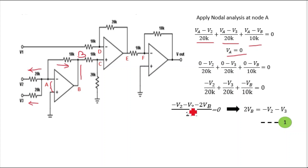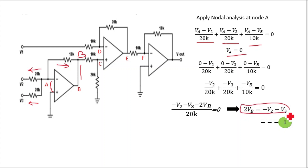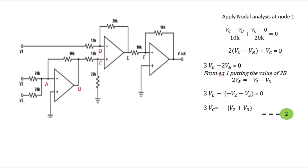This becomes: −V2 − V3 − 2VB, all divided by 20K, equals zero. The 10K term becomes −2VB after taking LCM. So 2VB = −V1 − V2 − V3. This is expression number 1. We have calculated the value of VB at this point, so let's proceed to find the value of VC.